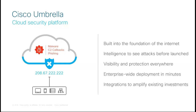Umbrella is Cisco's cloud-based DNS security solution that works and behaves very differently than your usual security tools. Umbrella provides a first line of defense against threats on the internet wherever users go. By analyzing and learning from internet activity patterns, Umbrella automatically uncovers attackers' infrastructure staged for current and emerging threats, and proactively blocks malicious requests before they reach a customer's network or endpoints. With Cisco Umbrella, customers can stop phishing and malware infections earlier, identify already infected devices faster, and prevent data exfiltration. Because Umbrella is built into the foundation of the internet and delivered from the cloud, it provides complete visibility into internet activity across all locations and users. Plus, it's one of the simplest security products to deploy and manage.